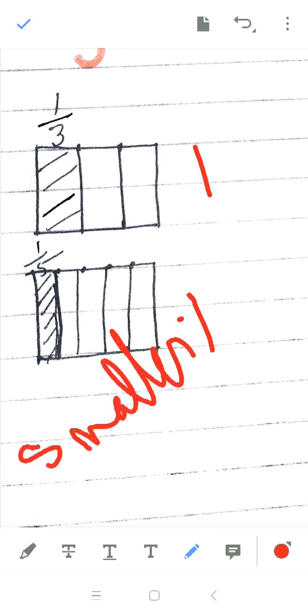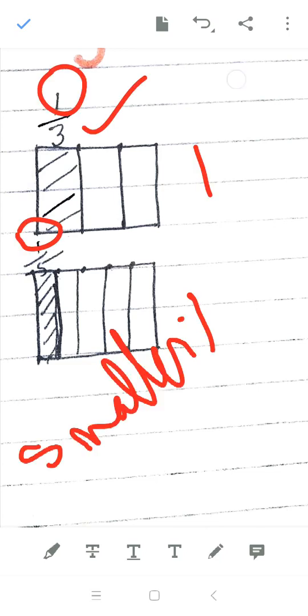So once again when the numerators are same, see 1, 1. The smaller denominator is 3 which is greater. Now this is how we have to see here.